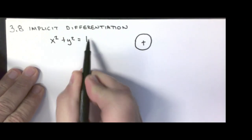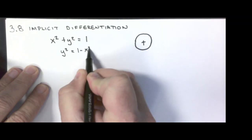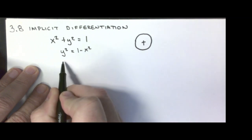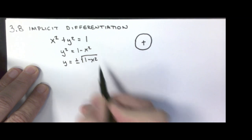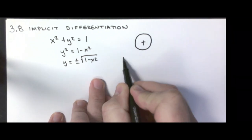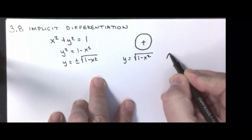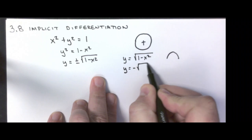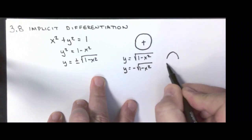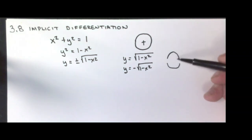First, subtract the x squared from both sides. Then take the square roots of both sides, where y equals the square root of 1 minus x squared is the equation for the upper semicircle, and y equals negative the square root of 1 minus x squared is the equation for the lower semicircle. Each of those does represent a function.